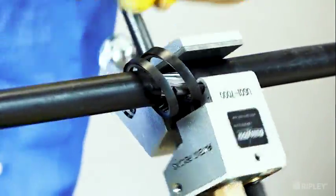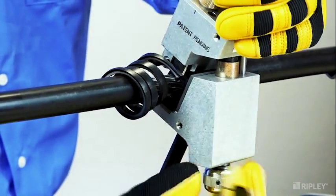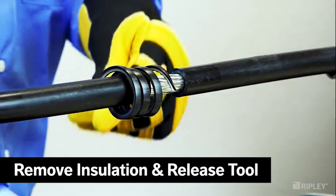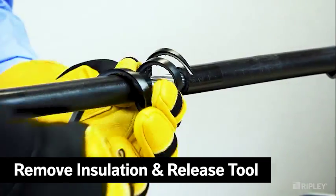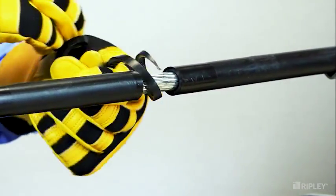Continue to rotate the tool until the stripping length has been achieved. Then release the tool from the cable and remove the insulation chip to complete the mid-span stripping operation.